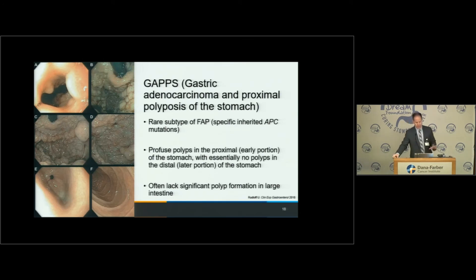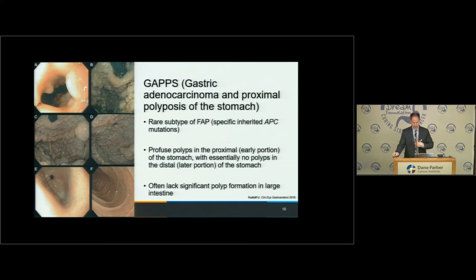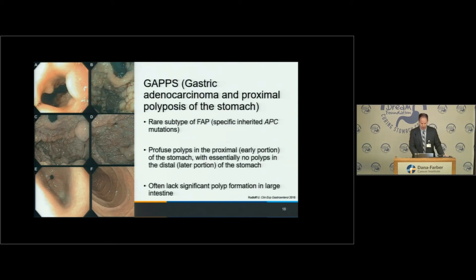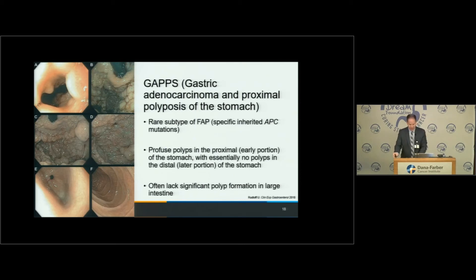GAPS is a relatively recently recognized syndrome — an offshoot of FAP because it's caused by inherited alterations in the same APC gene, but in a very specific portion. It's unusual in that it causes a pretty striking appearance within the stomach — profuse polyps in the proximal stomach, the early portion just as it comes off the esophagus. GAPS really is a syndrome affecting the upper stomach where there seems to be a pretty high risk of stomach cancer, though it appears to be exceedingly rare. It's an example of how the location of a mutation within a gene can cause very different appearances.